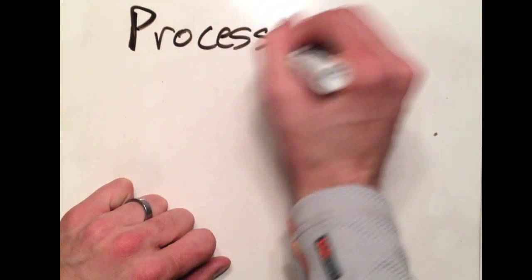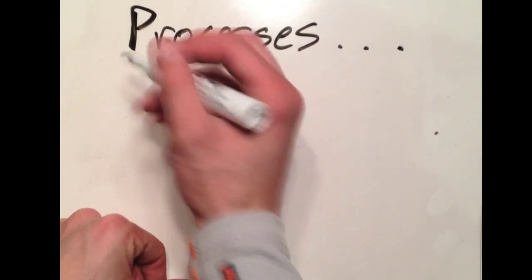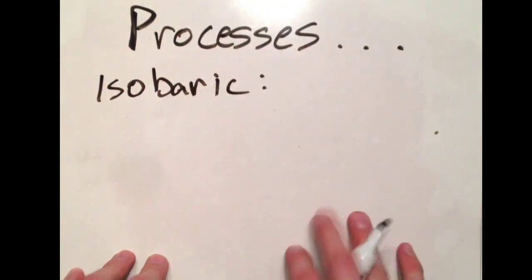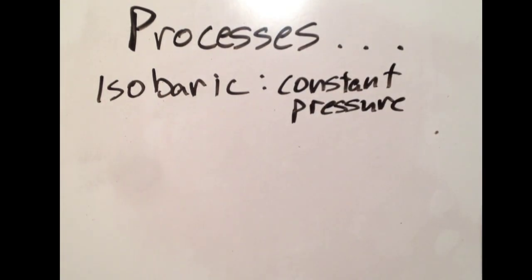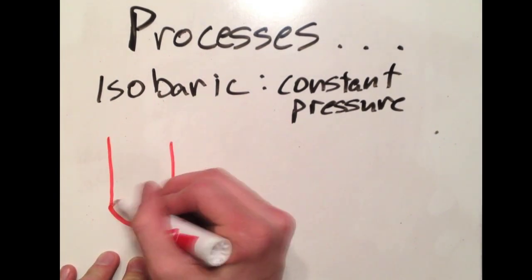There are several different thermodynamic processes that a substance can undergo. The first type that we are going to talk about is an isobaric process, meaning that it is undergoing this process at constant pressure.